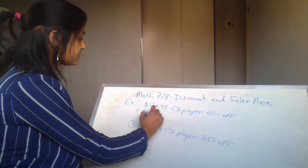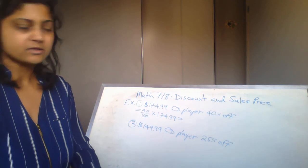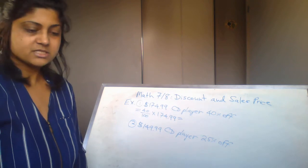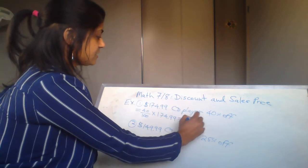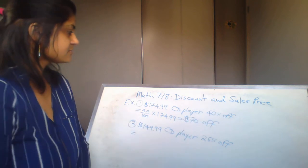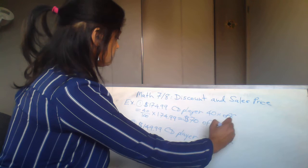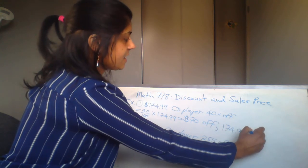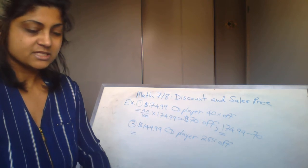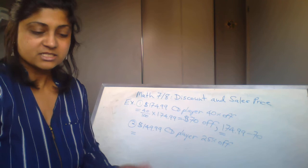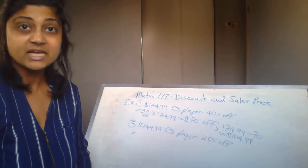For the first CD player: 40% is a very significant discount. We do 40 over 100 times $174.99 — you can put this directly into the calculator. We get $69.996, which we round to $70 off. Then for the sale price: $174.99 minus $70 gives us $104.99. So the sale price of the first CD player is $104.99.